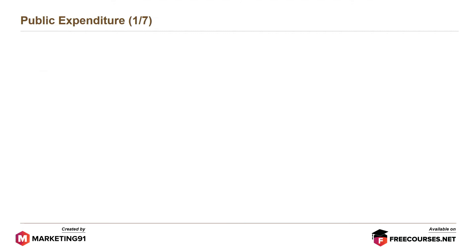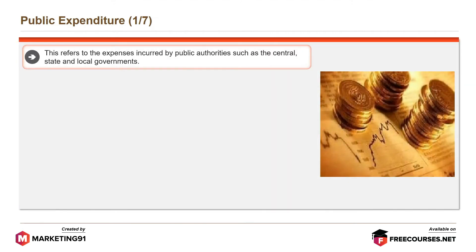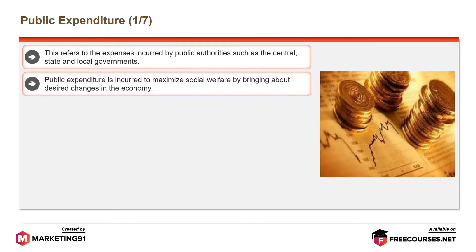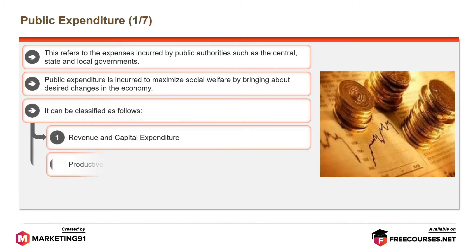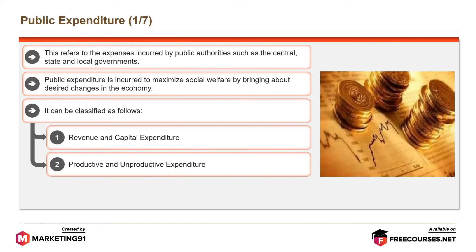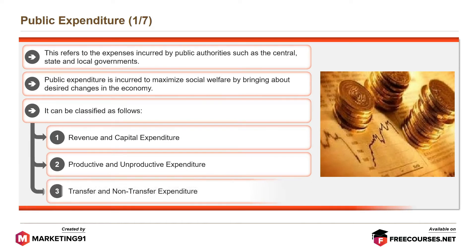The next instrument is public expenditure, which refers to the expenses incurred by public authorities such as the central, state, and local governments. Public expenditure is incurred to maximize social welfare by bringing about desired changes in the economy. It can be classified as revenue and capital expenditure, productive and unproductive expenditure, and transfer and non-transfer expenditure.